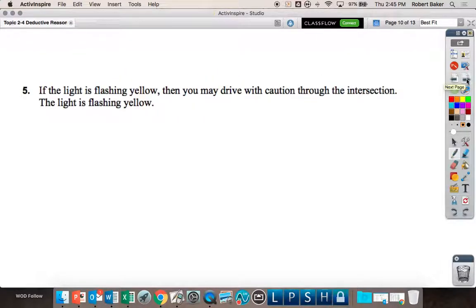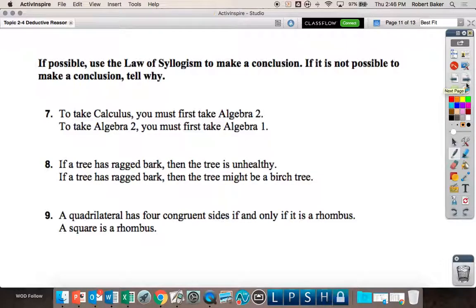This is syllogism. To take calculus, you've got to take algebra two. To take algebra two, you've got to take algebra one. So you have to take algebra one to take calculus. If it's repeated, it's deleted. So you can conclude to take calculus, you have to take algebra one. Now this one's weird, guys. This is the last one we're going to do.